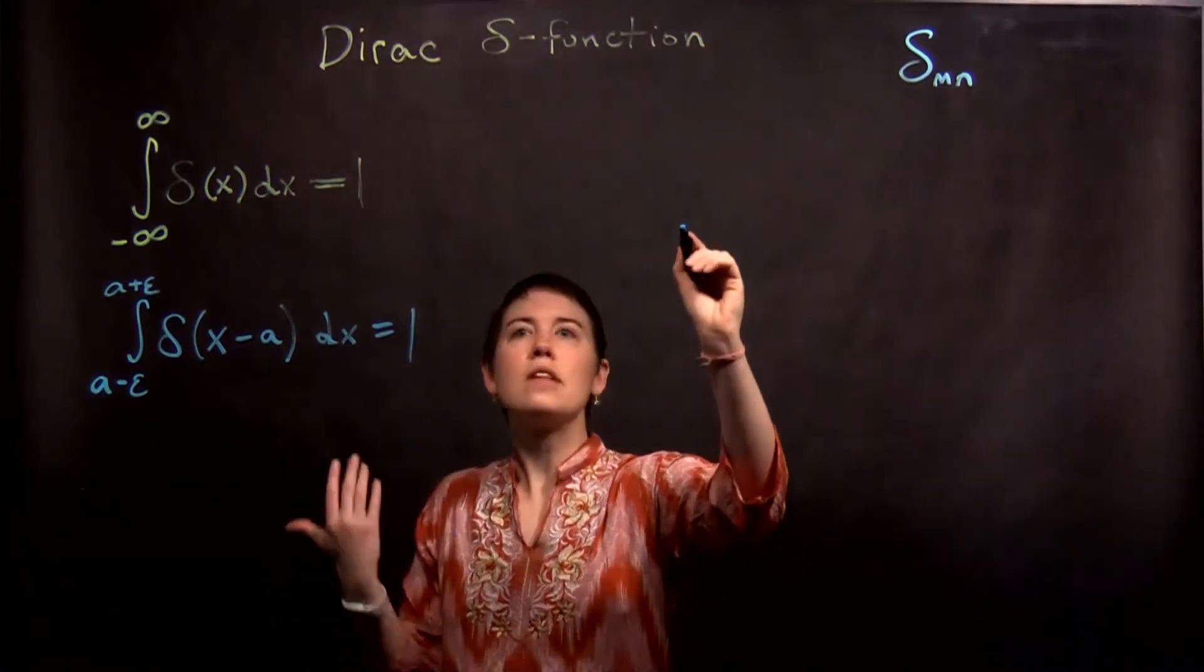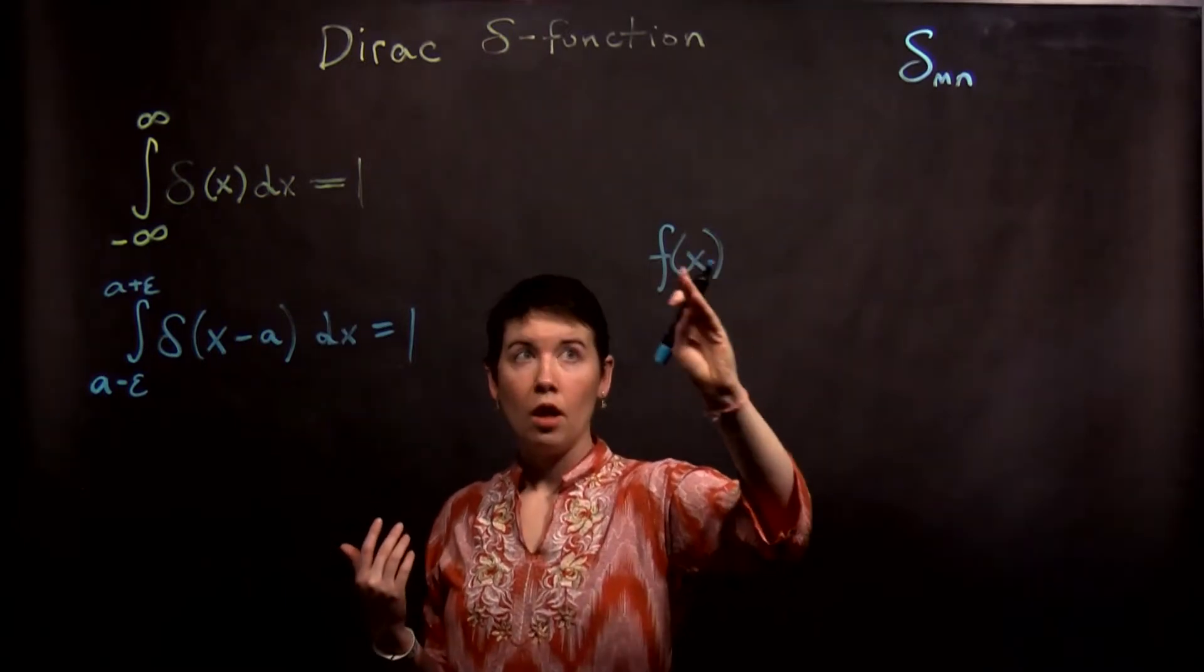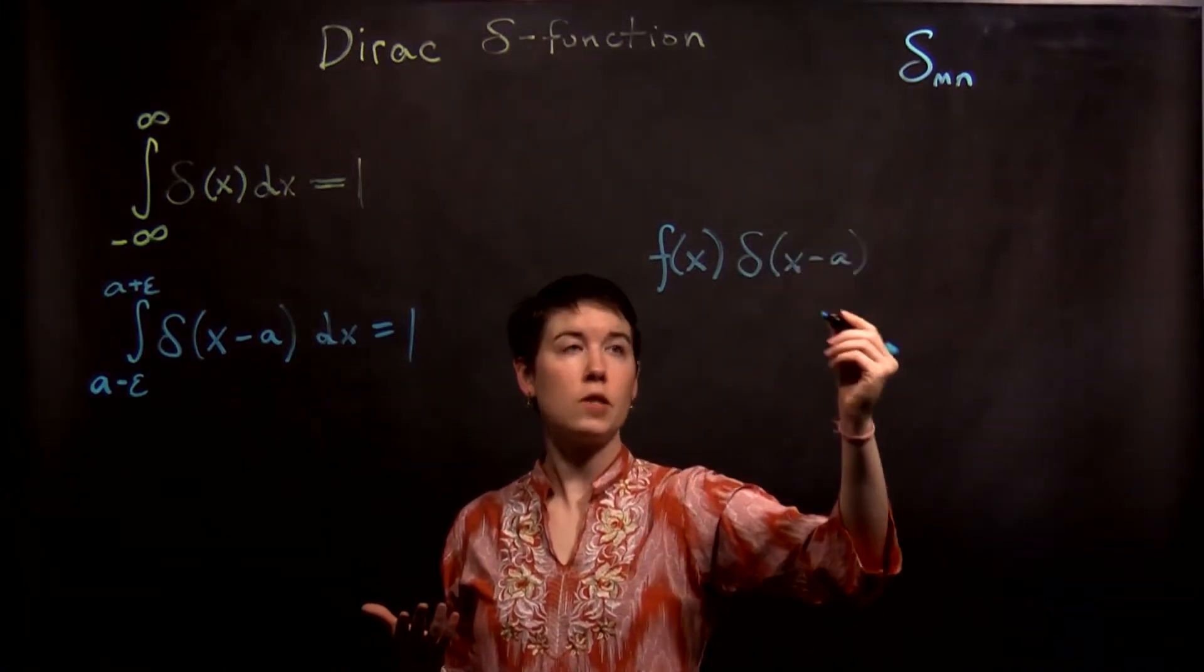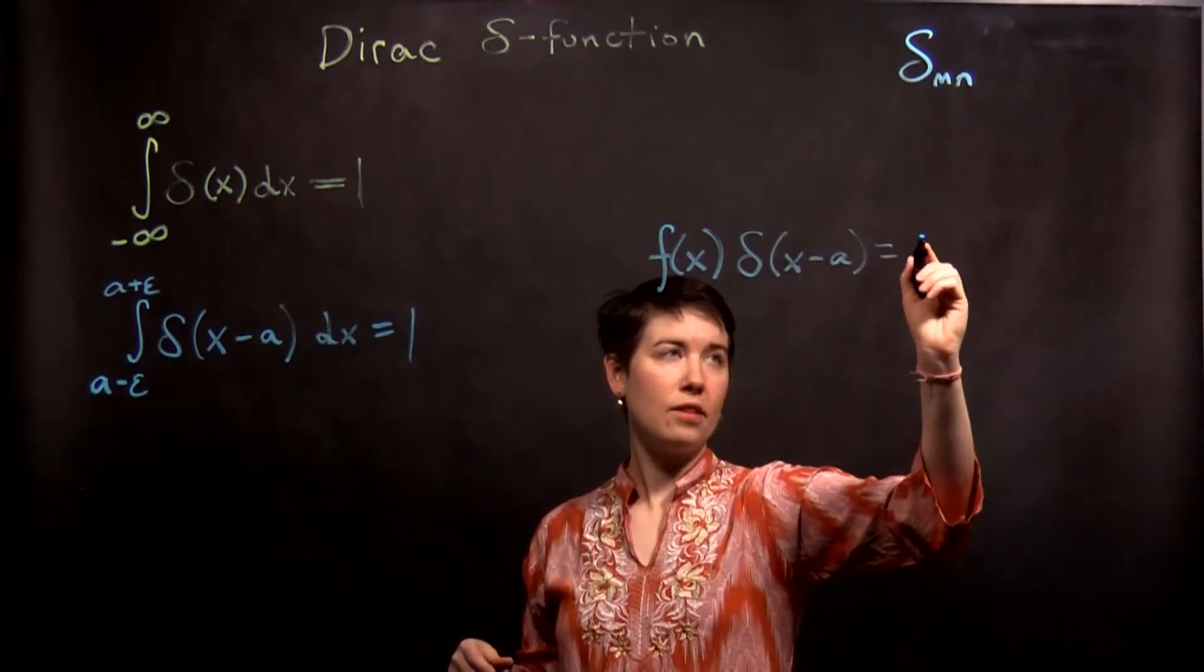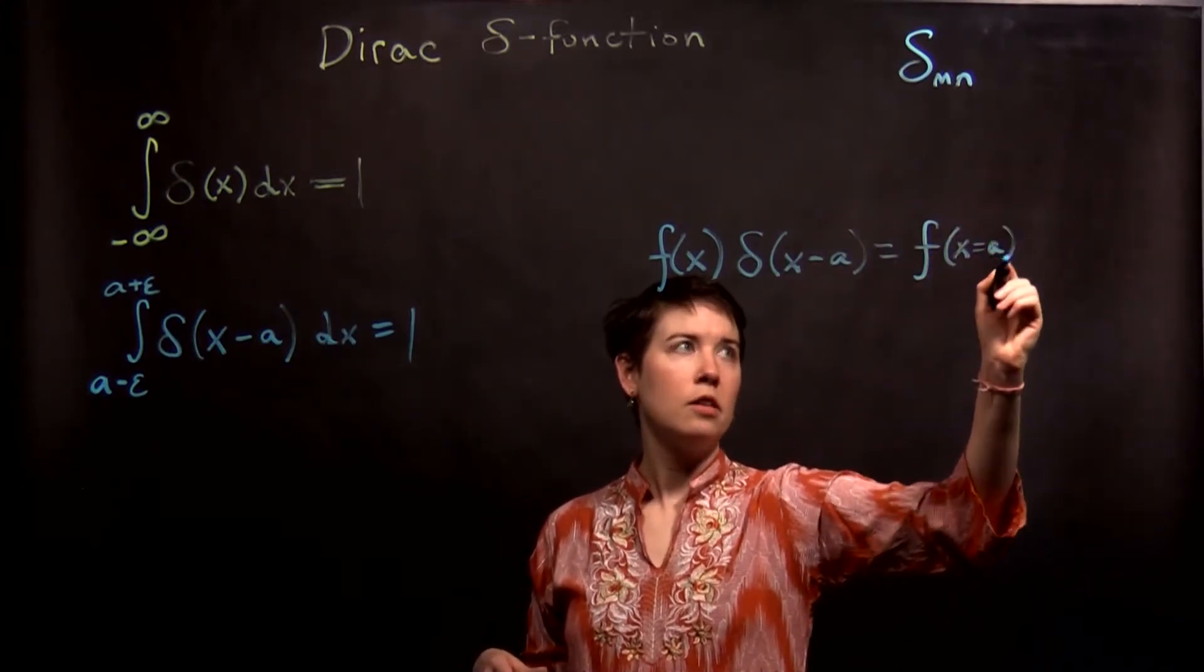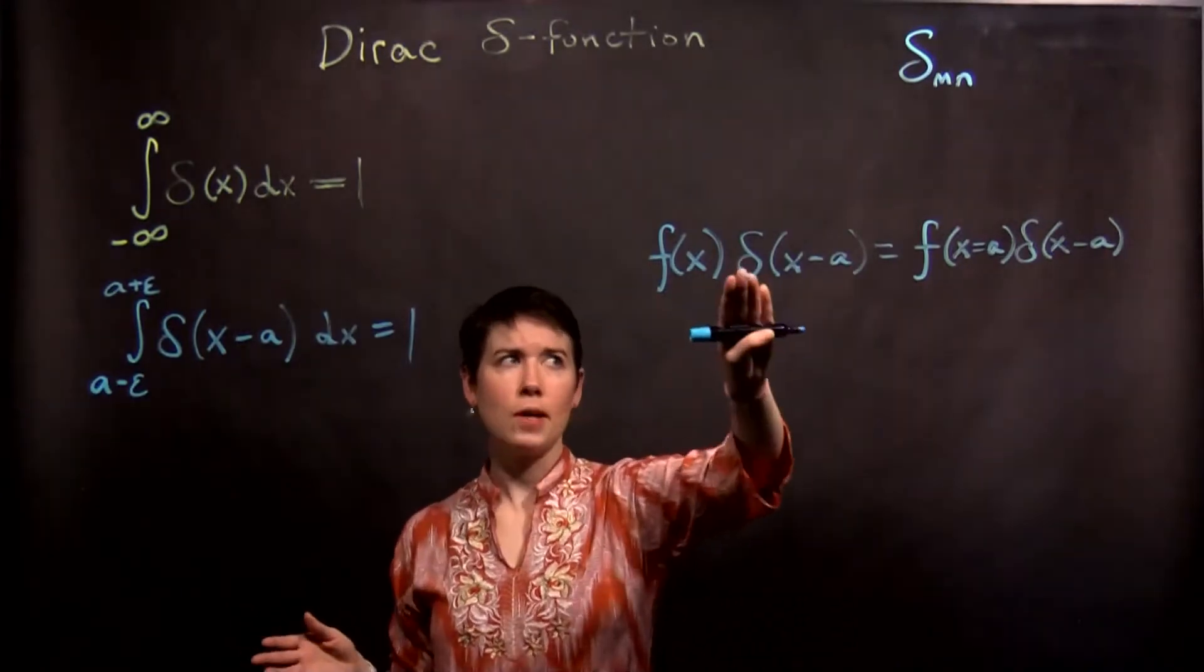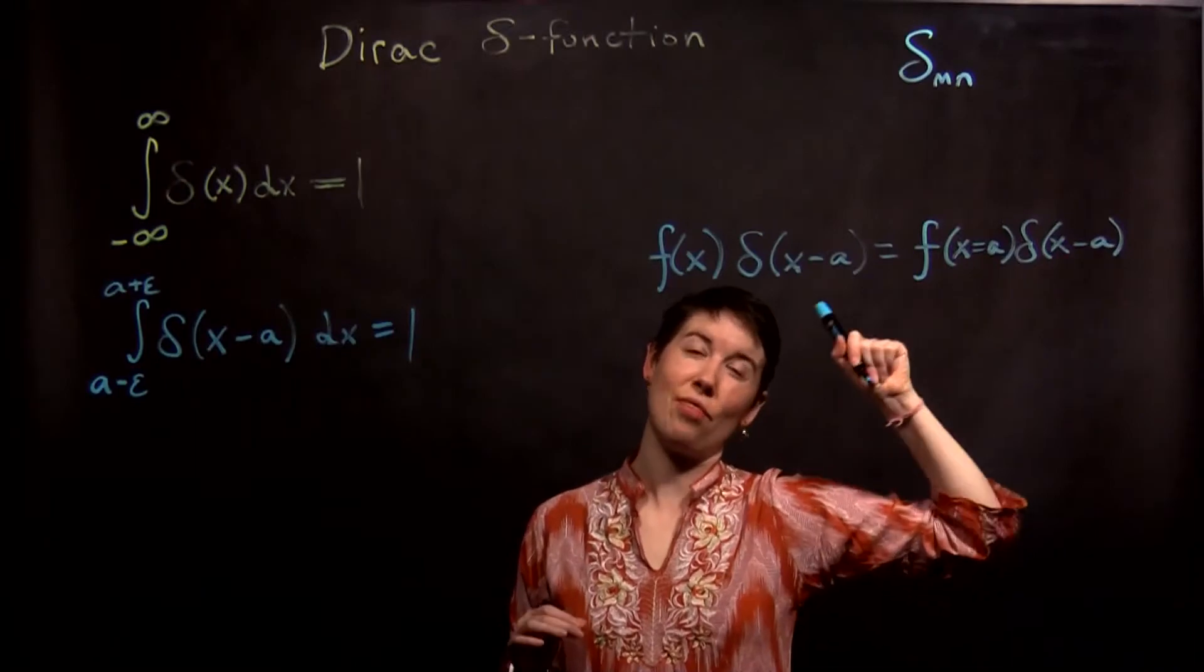But there's a few things that we might use it for. If I have a function of x, and then it is multiplied by a delta function of x minus a, where a is a specific scalar value. But that is the same as saying I have a function at x equals a, multiplied by the delta function x minus a. So it's not valid to say f of x times delta is just that function. That's not true. You have to still keep the delta function there.